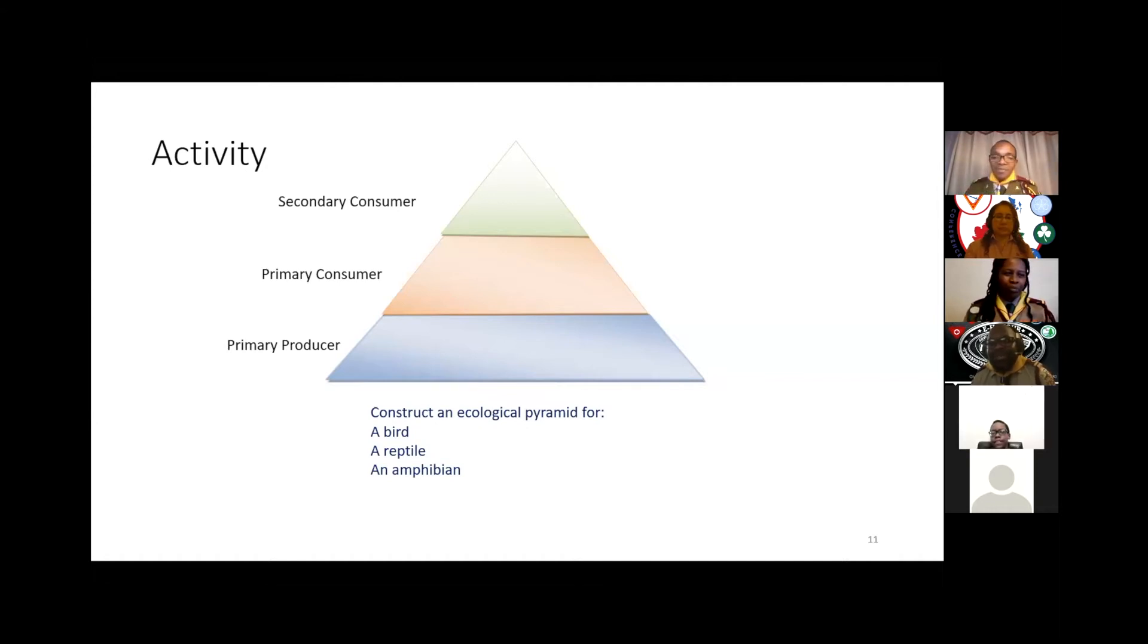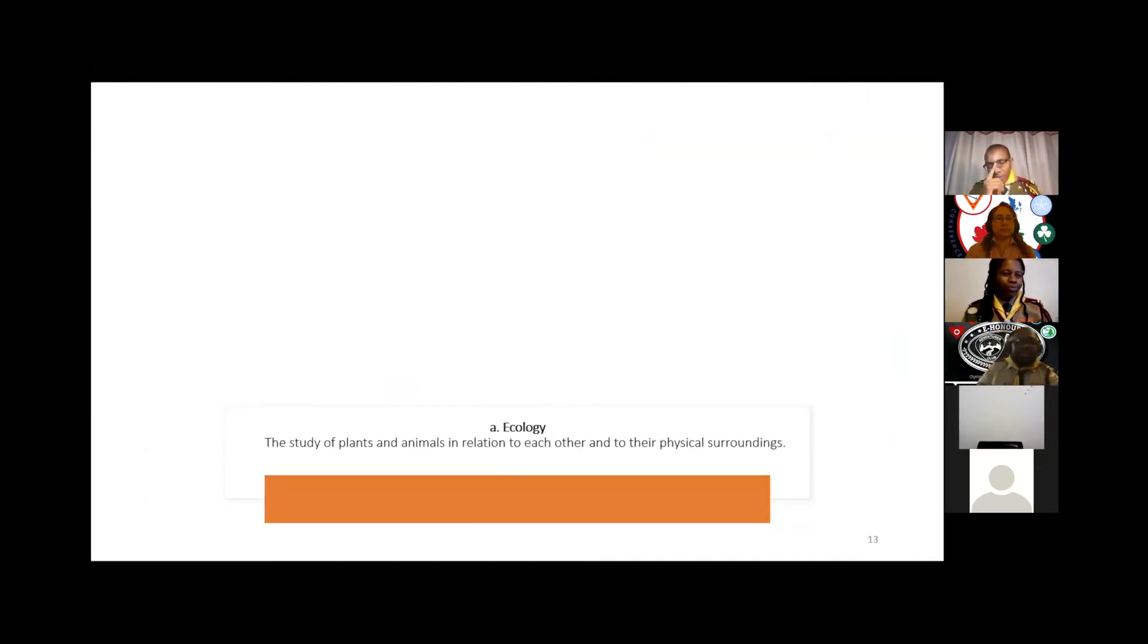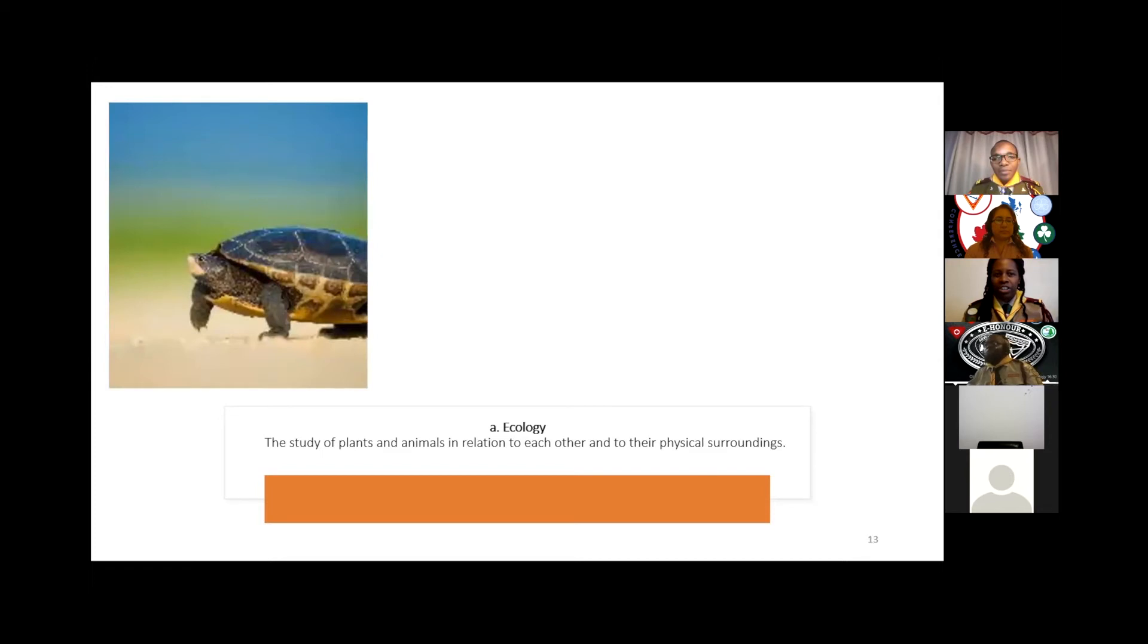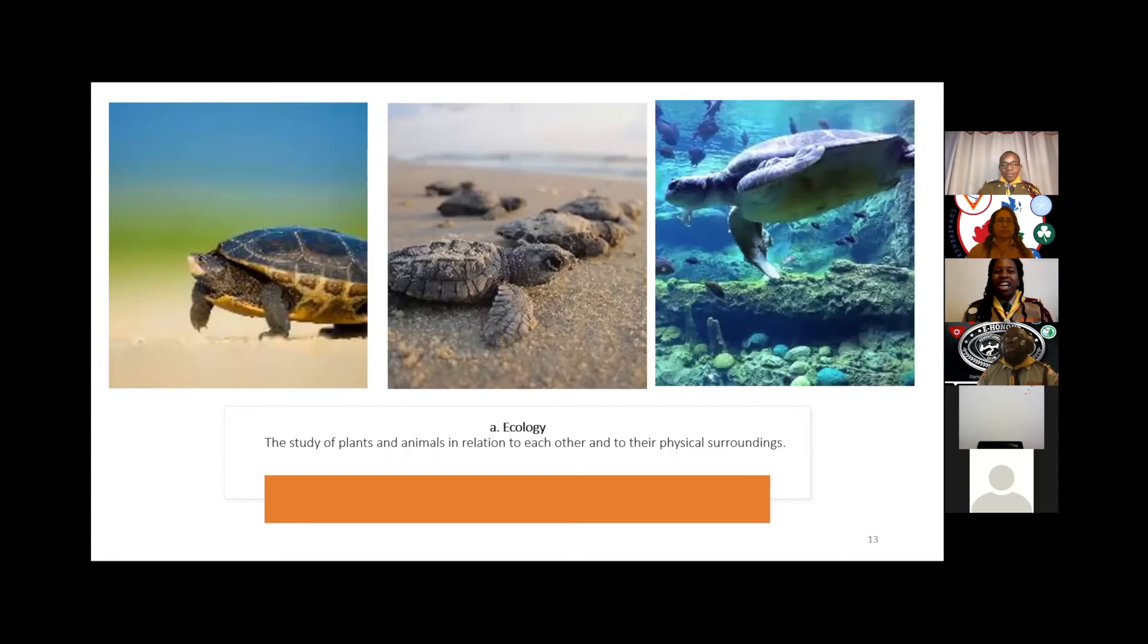We'll move on to requirement three. Now we're going to go through the terms, the terminologies. The first term is ecology. Ecology is the study of plants and animals in relation to each other and to their surroundings. For example, ecology may be the study of a single organism, like the study of a single turtle including what it eats and where. It may also be the study of an entire species, like all turtles in a freshwater pond including how they breed and rise and fall in numbers. Ecology can also be the study of an entire ecosystem, so the study of all organisms in a freshwater pond including how they interact with each other.